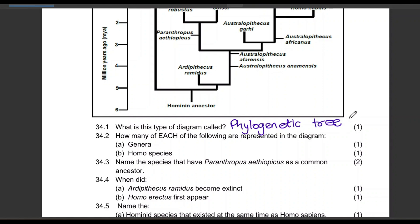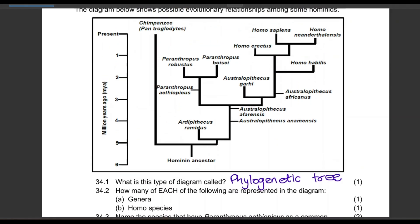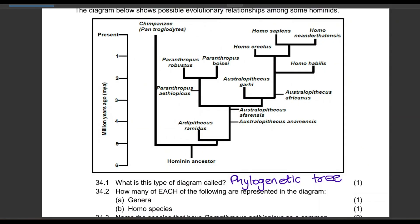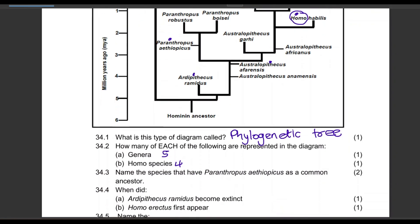How many genera are represented in the diagram? Counting through, there are five genera represented. How many Homo species are represented? Any species with the word Homo — counting those gives us four Homo species in the diagram.